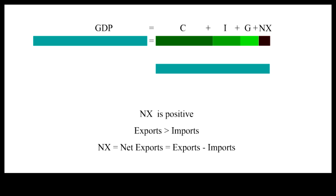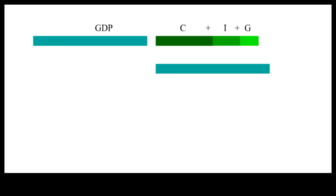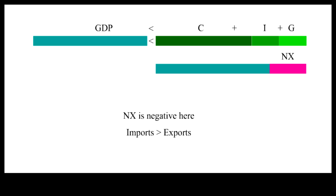Here, NX is positive because exports exceed imports. When consumption and government spending are higher, the sum of consumption, investment, and government spending would exceed the gross domestic product. These excess domestic expenditures would have to be made up by negative net exports. In other words, by importing more than the economy exports.